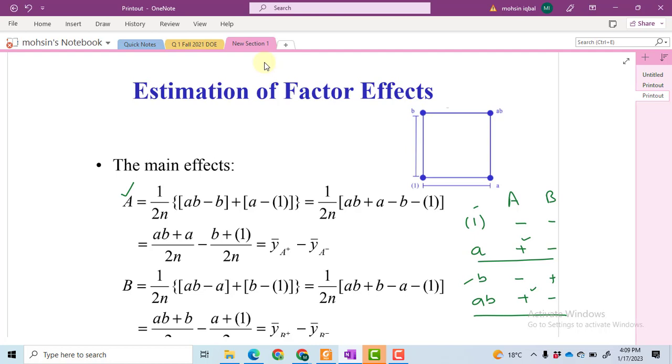Why do we divide by 2? Because there are two terms with the plus sign and two terms with the negative sign. Then we multiply by 2n. What is meant by n? This n refers to the number of replications—how many times we have repeated the experiment.